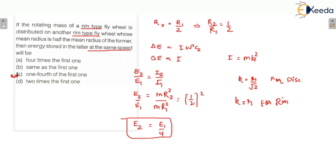To recap: the maximum fluctuation of energy, delta E, equals I omega squared times Cs. Cs is the coefficient of fluctuations of speed and is constant. Since energy is stored at the same speed, omega is the same for both cases, so delta E is directly proportional to the mass moment of inertia. Therefore E2 upon E1 equals I2 upon I1.